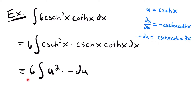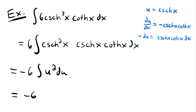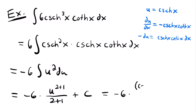Pulling the negative out to the front gives negative 6 times the integral of u squared du. Now we have a basic integral we can solve with the power rule for integration. Applying the power rule: negative 6 times u to the power of 2 plus 1, divided by 2 plus 1, plus c. The exponent becomes 3 and we divide by 3. Replacing u with hyperbolic cosecant of x gives negative 6 times hyperbolic cosecant cubed x divided by 3, plus c.